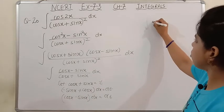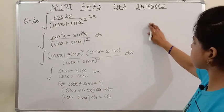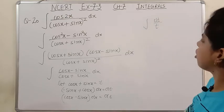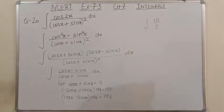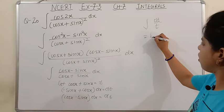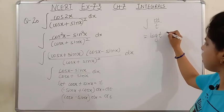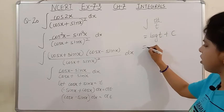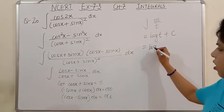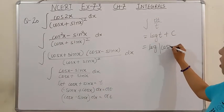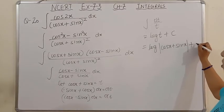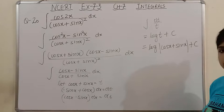Differentiating: (cos x - sin x) dx = dt. So we get ∫dt/t = log t + C. Replacing t with its value: log(cos x + sin x) + C. This is our answer, please note down.